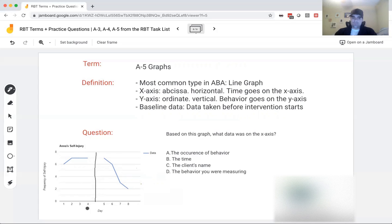The x-axis. It's down here. It's your horizontal. It's also known as the abscissa. Time goes on the x-axis. So day, session, hour, whatever your time is, goes on the x-axis, passage of time. Y-axis, the vertical, it's your ordinate, your behavior, whatever you're tracking, goes on the y-axis. So here, frequency of self-injury is your y-axis.